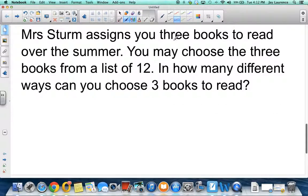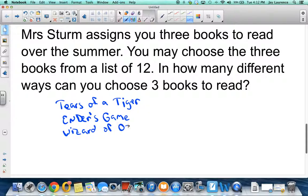All right. Mrs. Sturm assigned you three books to read over the summer. You may choose the three books from a list of 12. In how many different ways can you choose three books? Well, tell me what three books you picked. Maybe you picked Tears of a Tiger, maybe you picked Ender's Game, one of my favorite books of all time, and then maybe you picked The Wizard of Oz. Now, your friend says, I don't know. I think I'm going to pick Ender's Game, The Wizard of Oz, and Tears of a Tiger.